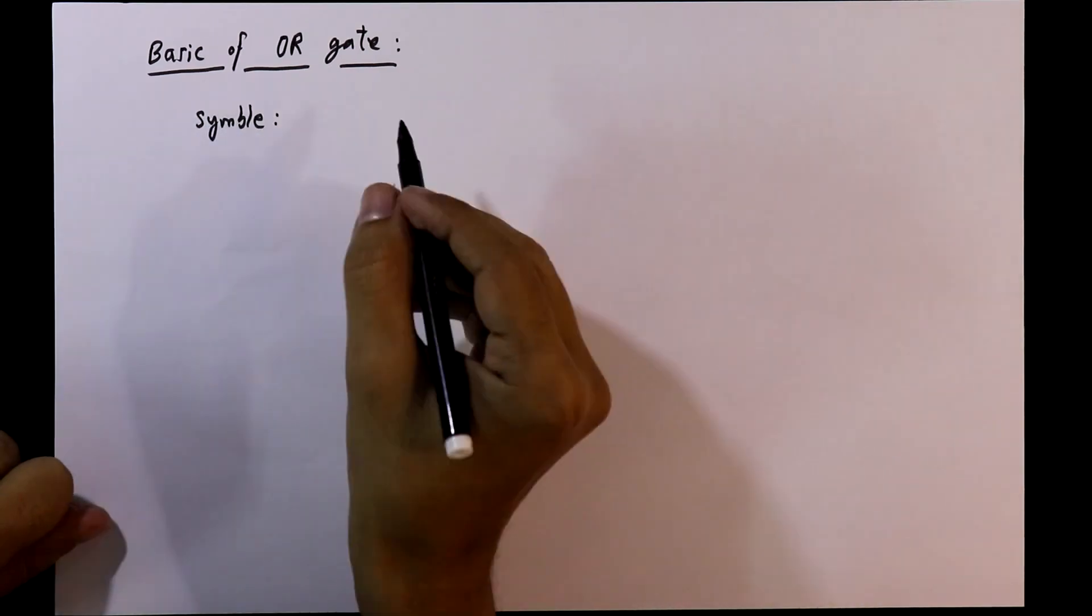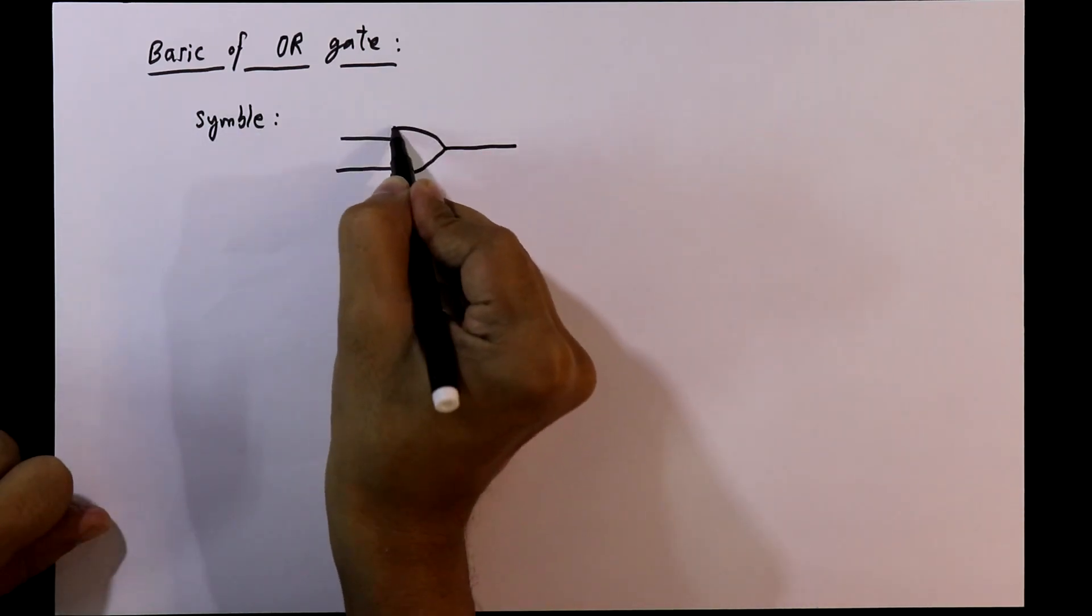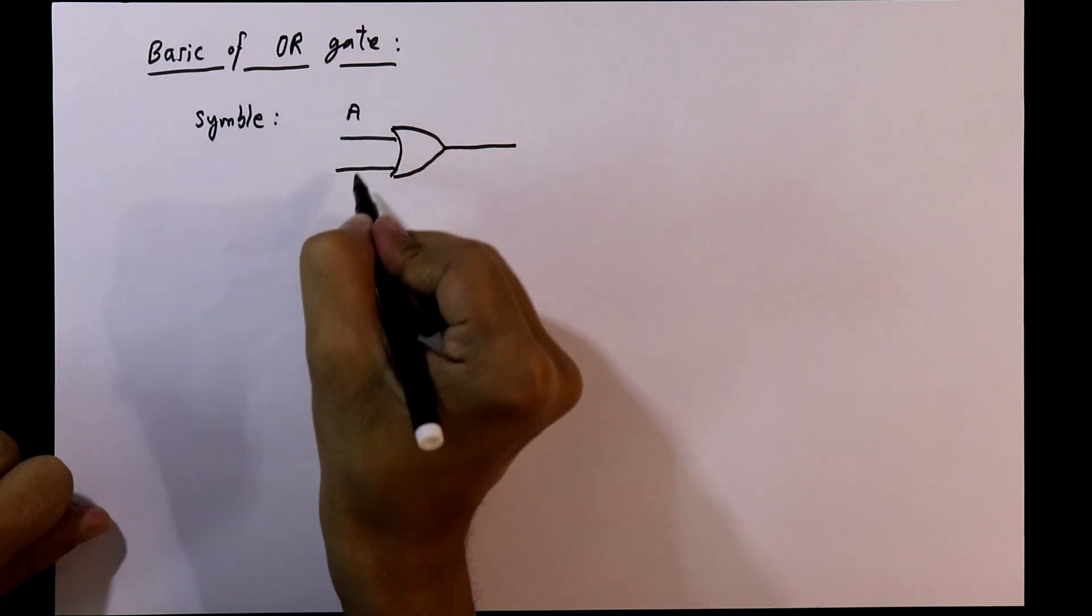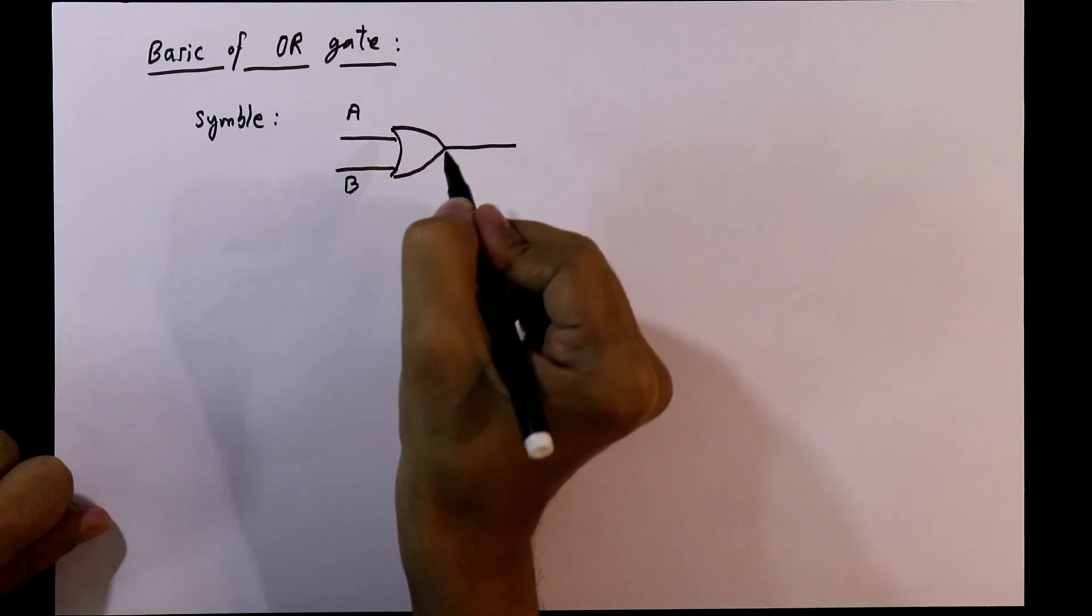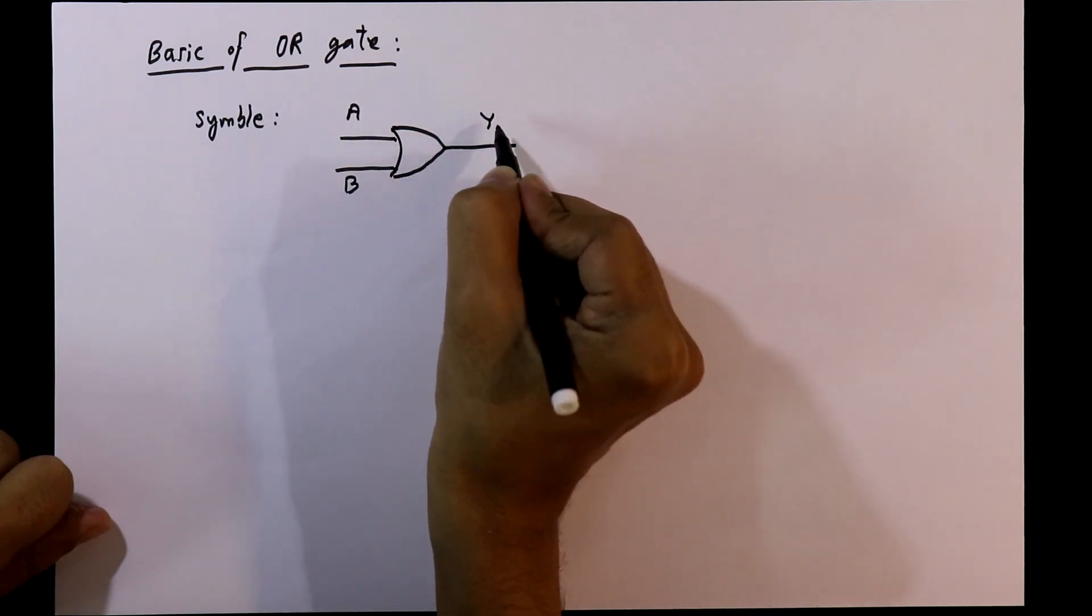The symbol of OR gate is like this. It has two inputs A and B and the output is Y.